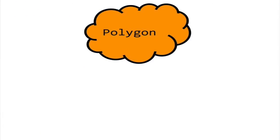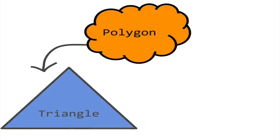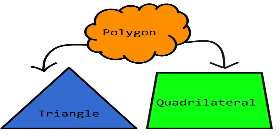In our example, polygon is an abstract class. Therefore, we cannot create polygon objects. What we can do is create objects of its derived classes, triangle and quadrilateral.